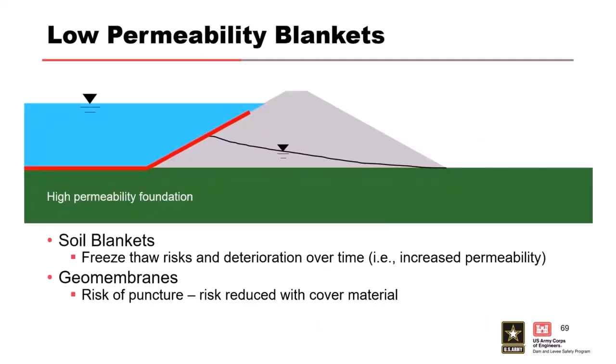Blankets: when you have a seepage issue through the embankment or foundation, you can place some sort of blanket on top — either a low-permeability clay material or a geomembrane. Both have benefits and risks. Soil blankets, depending on your part of the country, are really susceptible to freeze-thaw issues and permeability increases over time. I worked on a project in Wyoming where a three-foot compacted clay blanket was placed, and within two years from a seepage standpoint it was as if the blanket wasn't there — freeze-thaw had essentially opened it up. Geomembranes have very low permeability, but there is some risk of puncture.